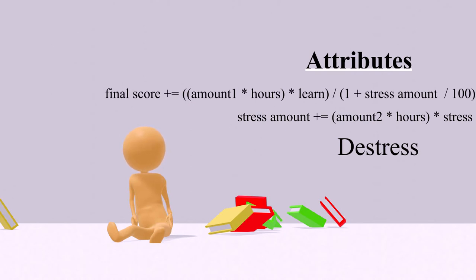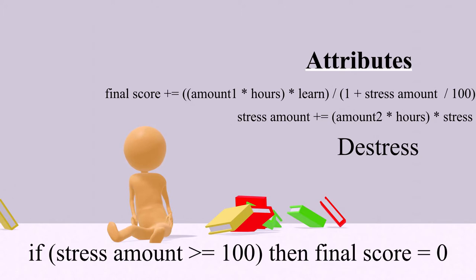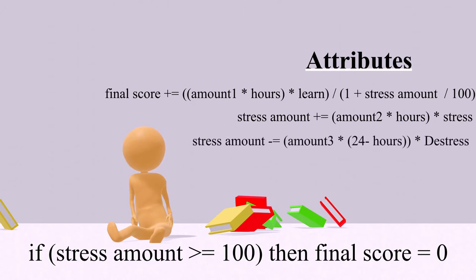And if a student is so unlucky that they end up hitting a stress number of 100, the program will determine that the student has reached the point of depression, and it therefore sets their final score to zero. Whenever the students are not in school or doing homework, their stress will go down. How efficient they are at lowering it depends entirely on their attributes, and some students might have a hard time doing this.